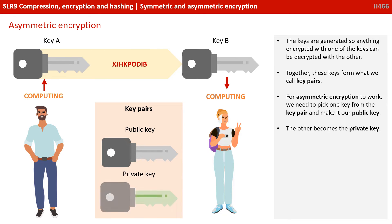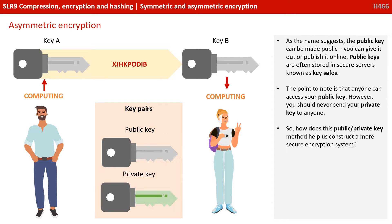For asymmetric encryption to work, we need to pick one key from the key pair and make it our public key. The other becomes our private key. As the name suggests, the public key can be made public — you can give it out and publish it online. Public keys are actually often stored in secure servers known as keysafes in the cloud. The point to note is that anyone can access your public key. However, you should never send your private key to anyone.